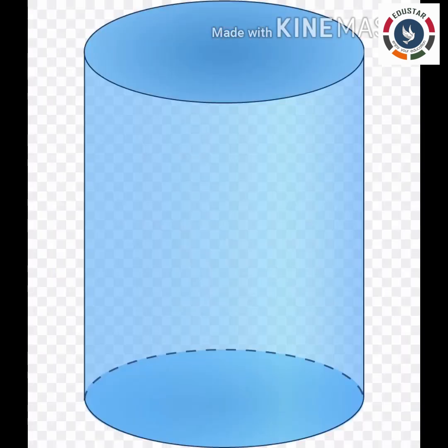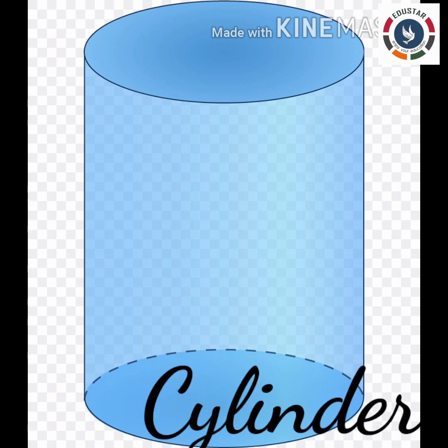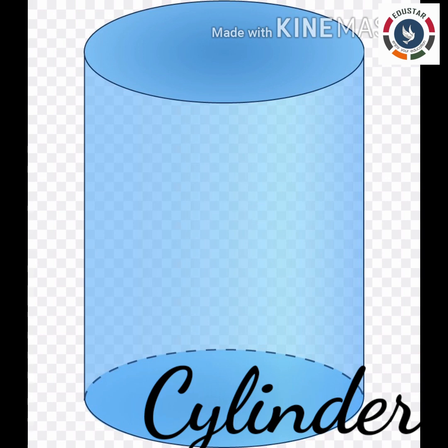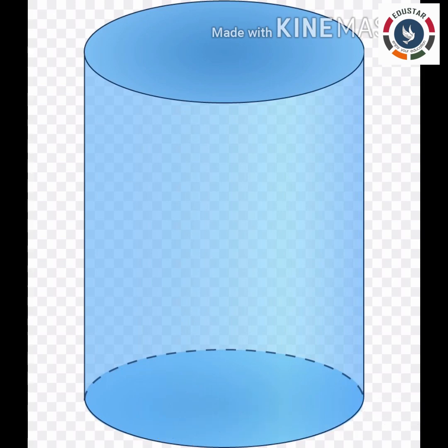Let's see the next solid shape — a cylinder. A cylinder has three faces. Two of them are flat and the third one is curved. It can roll because it has a curved surface. Let's see some examples of cylinder.